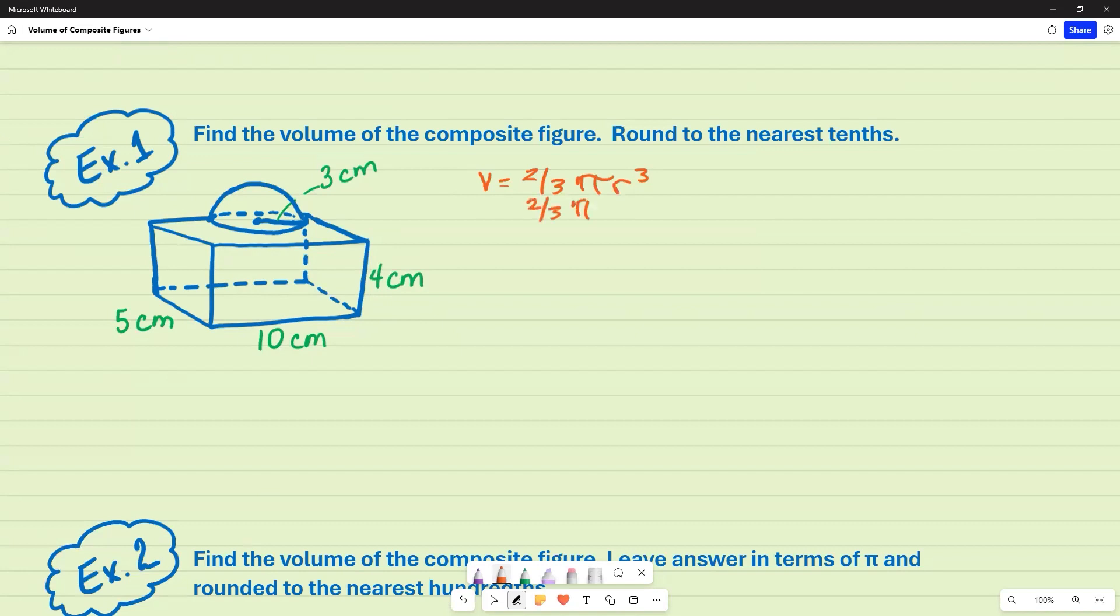So we have two-thirds pi times three raised to the third power, which is 27. And so 27 times two, which is the numerator, times pi. All of that is going to be divided by three if that's how you're putting it in your calculator. And when you do that, you're going to end up with 18 pi.